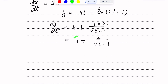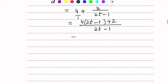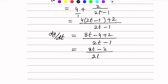We write this as a single fraction using LCM to make applying the chain rule easier. The LCM gives us: dy/dt = (4 into (2T minus 1) plus 2) over (2T minus 1). Simplifying: dy/dt = (8T minus 4 plus 2) over (2T minus 1) = (8T minus 2) over (2T minus 1).